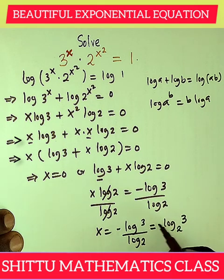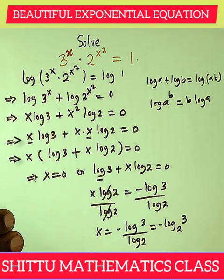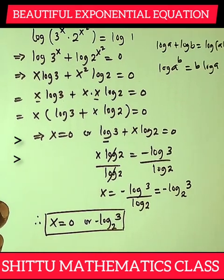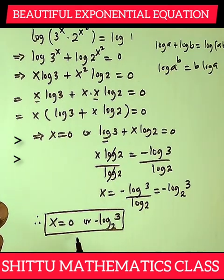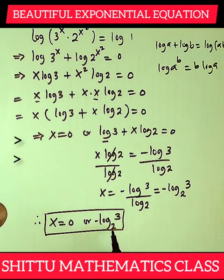We can also write minus log 3 over log 2 as minus log 3 to base 2. Therefore, the two possible values of x are: x equals 0, or x equals minus log 3 to base 2. Thank you for watching, bye.